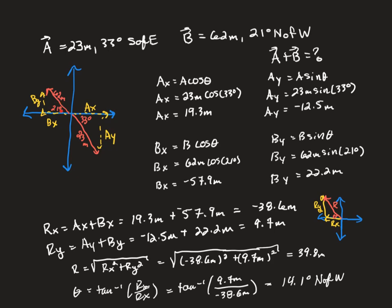For vector B, the 21 degrees is adjacent to the x, so once again I'm going to use cosine. And the 21 degrees is opposite to the y-component, so I'm going to use sine to find the y-component of vector B.